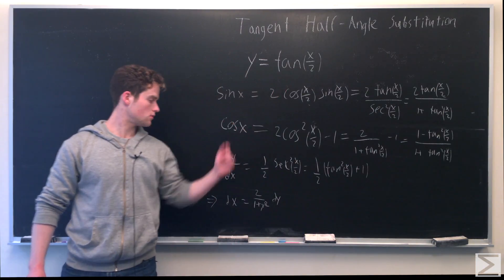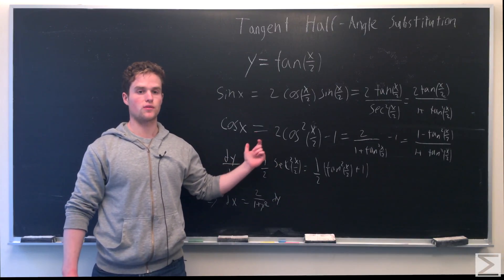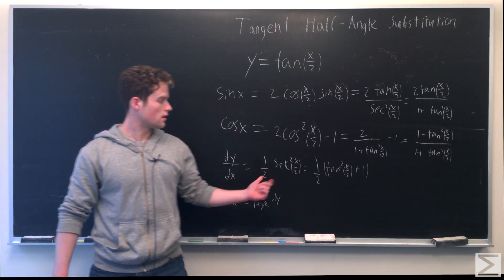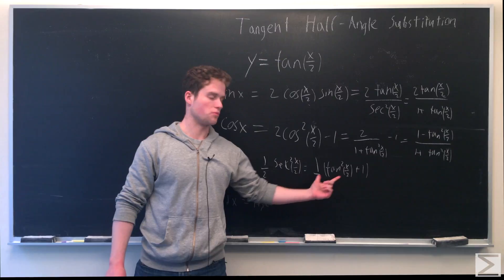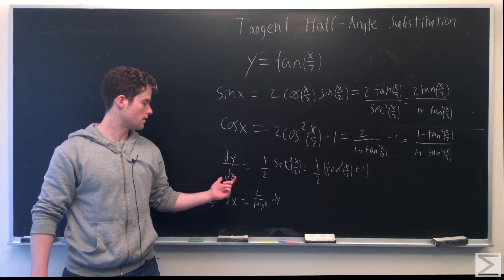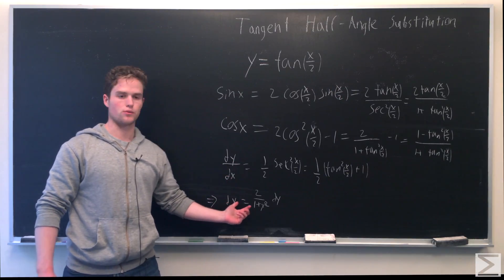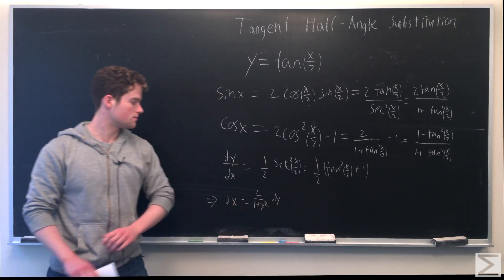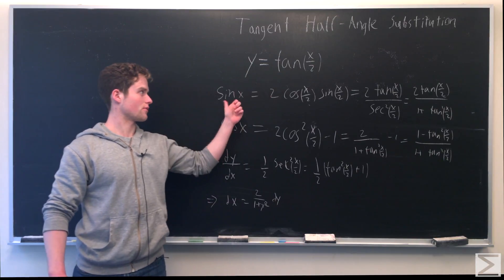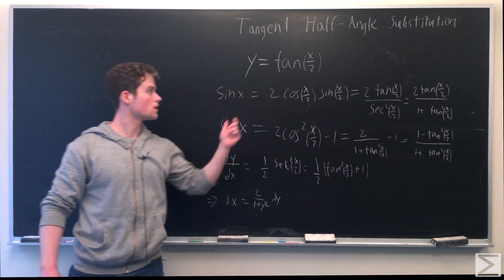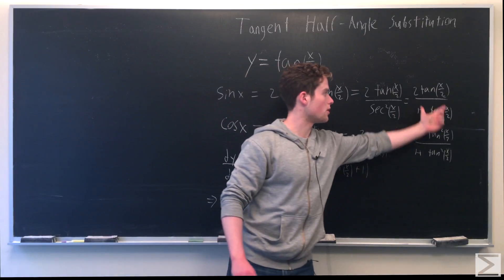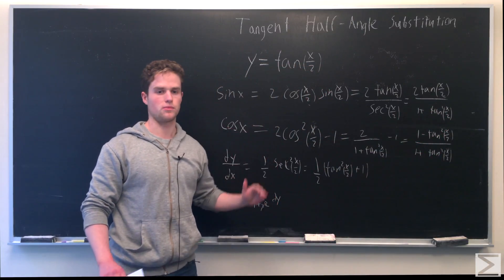Since y equals tan(x/2), dy/dx is one half times the derivative of tan(x/2), which is 1 over cosine²(x/2) — that is, one half secant²(x/2), which equals one half times (tan²(x/2) plus 1). Rewriting, dx is equivalent to 2 over 1 plus y² dy. Using these three substitutions, if we have something that's just a function of trigonometric functions, we can rewrite it as a rational function of polynomials.